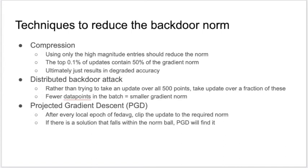With the context that norm clipping is the defense we need to beat, we set about creating novel attacks to outsmart it. We try compressing the malicious update by only sending the high magnitude entries; however, this ends up degrading accuracy without much benefit. We also try distributing the backdoors among the malicious clients instead of attempting to backdoor the entire malicious dataset each time a malicious client is chosen. This serves to decrease the norm of the update, since the norm scales with the number of data points the update has taken over.